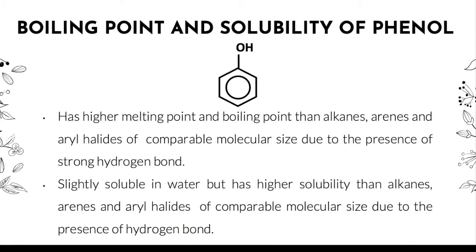For phenol: phenol has a higher melting point and boiling point than alkenes, arenes, and aryl halides of comparable molecular size, due to the presence of strong hydrogen bonds. Alkenes, arenes, and aryl halides cannot form hydrogen bonds between themselves, but phenol can form hydrogen bonds between its own molecules. That is why phenol has a higher melting point and boiling point compared to those three types of compounds.